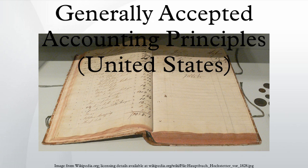Full Disclosure Principle: The amount and kinds of information disclosed should be decided based on trade-off analysis, as a larger amount of information costs more to prepare and use. Information disclosed should be enough to make a judgment while keeping costs reasonable. Information is presented in the main body of financial statements, in the notes, or as supplementary information. Constraints: The Objectivity Principle states that the company financial statements provided by the accountants should be based on objective evidence.